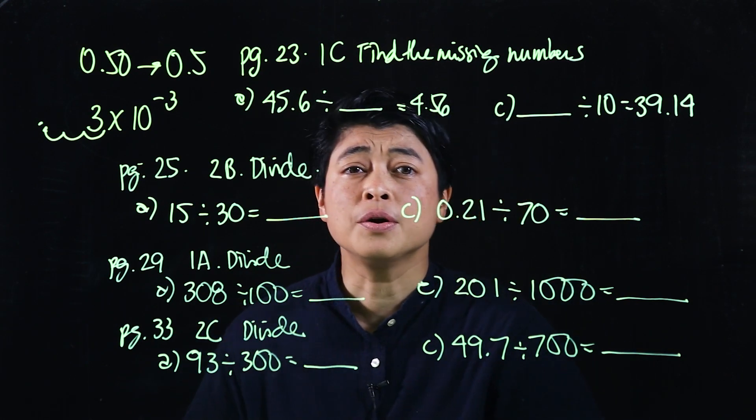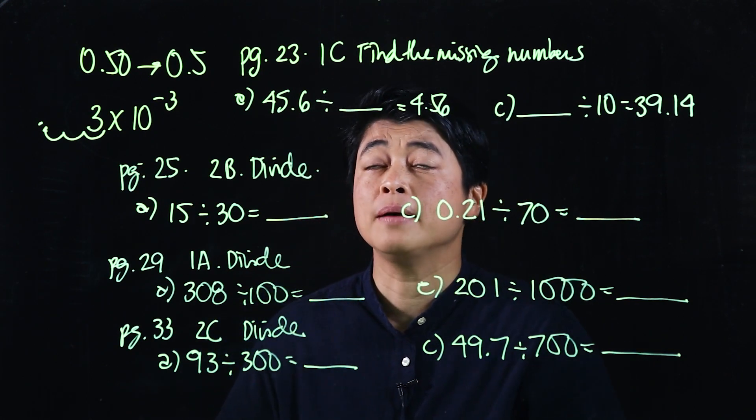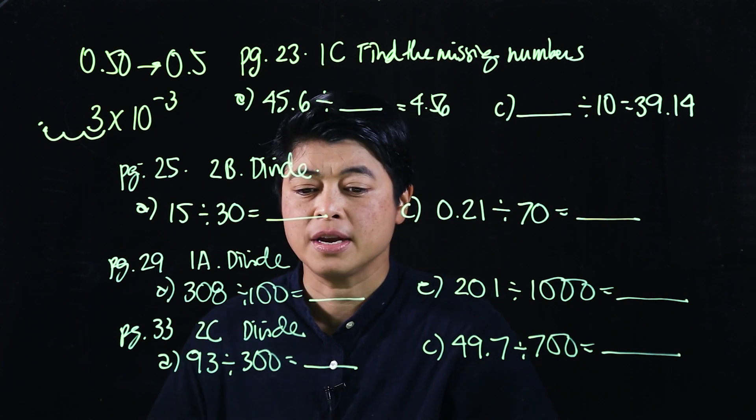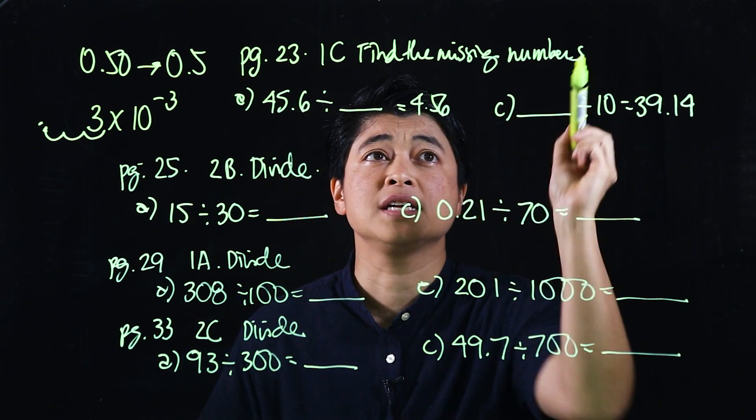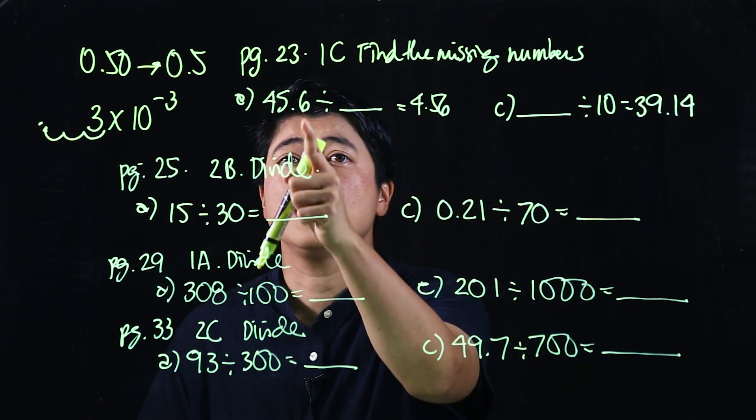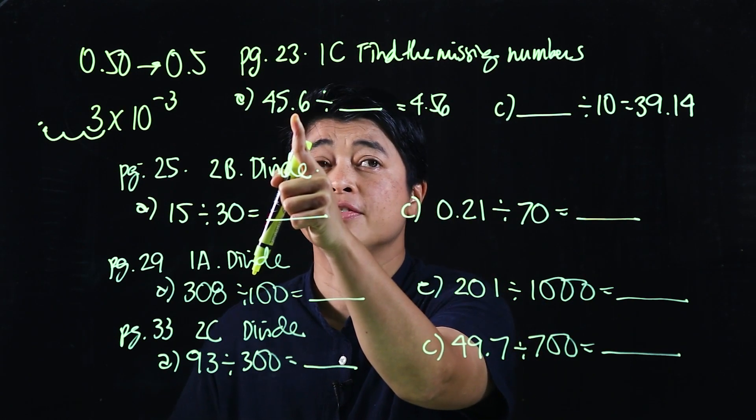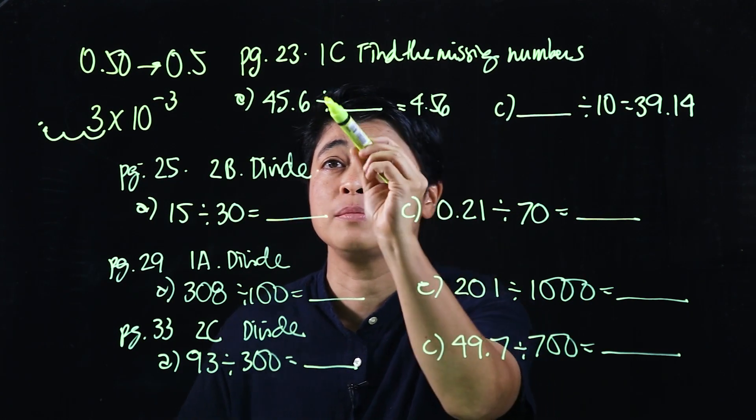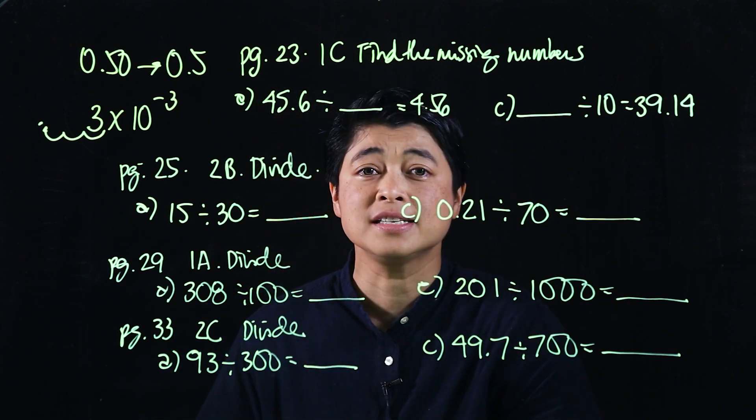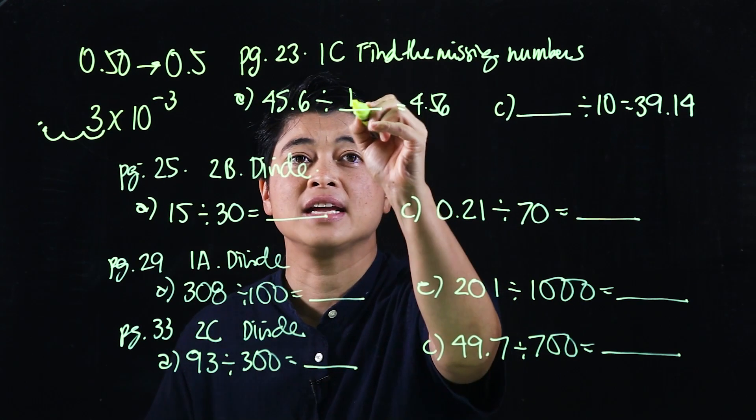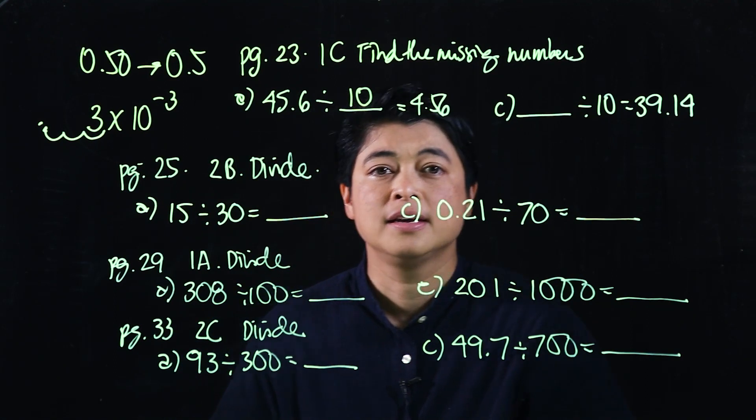Okay, so going over these problems on page 23, it says find the missing numbers. So I'm dividing, and what happened is from here, 45.6 became 4.56. So that means I moved one decimal place to the left. So that means I divided by 10.